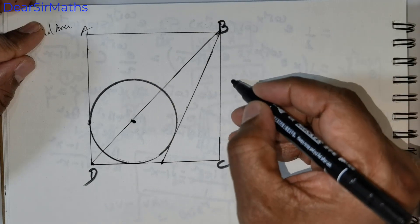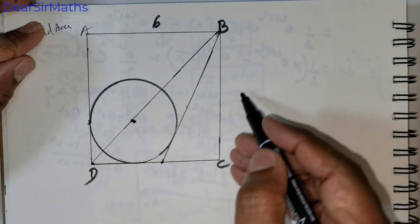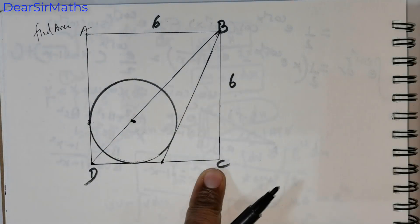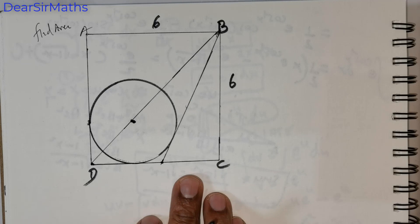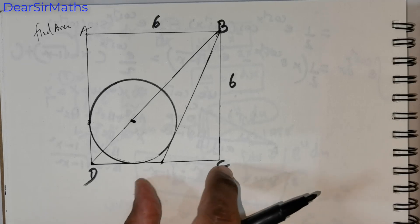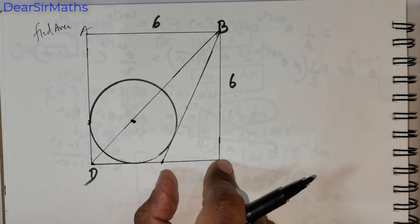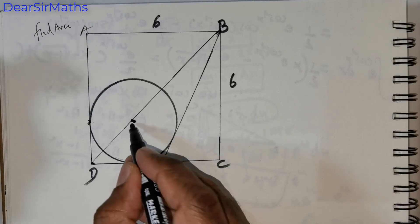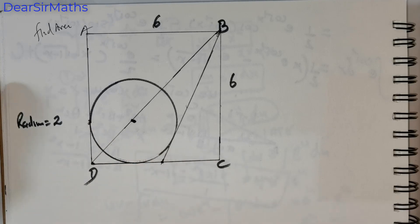According to the question, the side of the square is given to be 6 units — all sides are 6 units. Now we have to know this length. What I wish to do is drop a perpendicular. The radius of the circle is given to be 2 units. According to the tangent theorem, since DC is a tangent to the circle, if you drop a perpendicular from the center to the tangent, that would make an angle of 90 degrees.